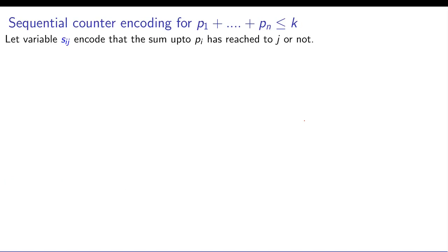So again we follow the idea of sequential counter encoding in which you'll introduce fresh variables. In this case you need sij with one extra index, and in sij you're saying that by the time you reach pi, the sum of the variables from p1 to pi has reached j or not. So that's the encoding of sij.